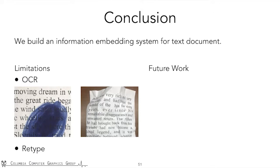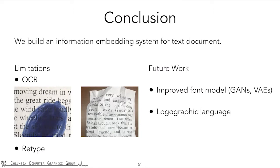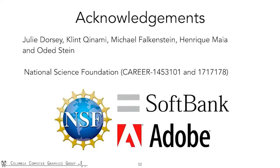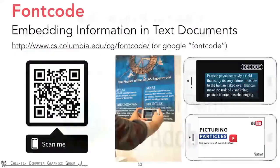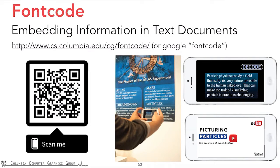In the future, we hope to use state-of-the-art font models like GANs and VAEs to improve the selection of perturbed glyphs. Right now, our method focuses on English and can be readily extended to other alphabetic languages. We are also interested in applying our method to logographic languages such as Chinese. We have a simple smartphone demo as shown in the video, and we are also building a web application — hopefully appearing in about a month. Please check our project website and stay tuned. This QR code links to the project webpage, and we hope in the future this QR code can be replaced by our technique.